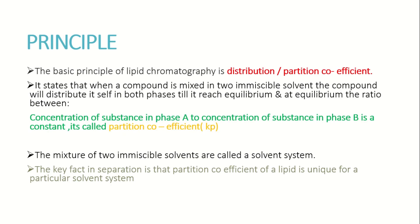The principle is the distribution or partition coefficient. It states that when a compound is mixed into immiscible solvents, the compound will distribute itself in both phases until it reaches equilibrium. At equilibrium, the ratio between the concentration of substance in phase A to concentration of substance in phase B is a constant, called the partition coefficient. This partition coefficient of a lipid is unique for a particular solvent system. For example, LDL having a partition coefficient of one in a particular solvent system will not change under any conditions.